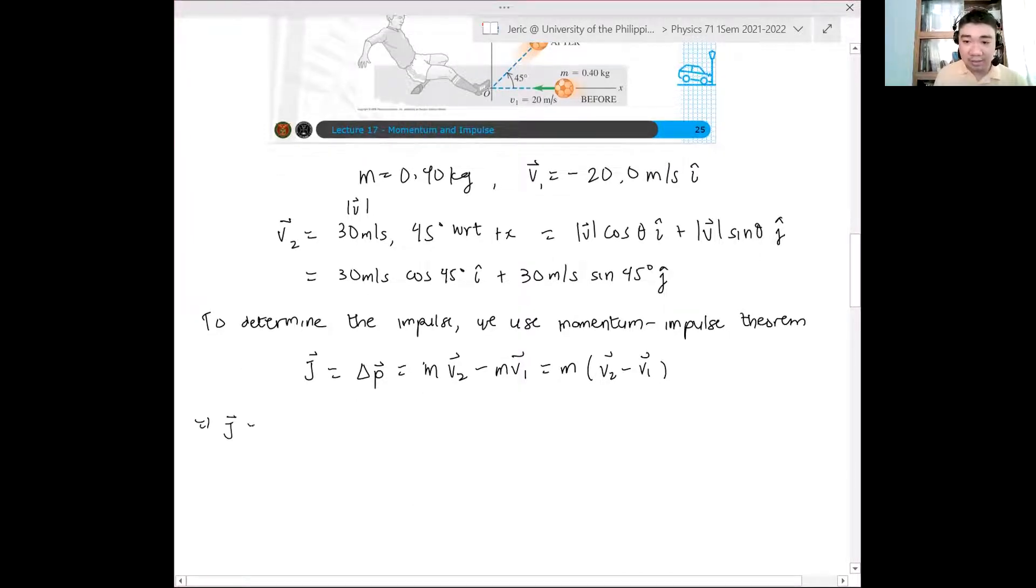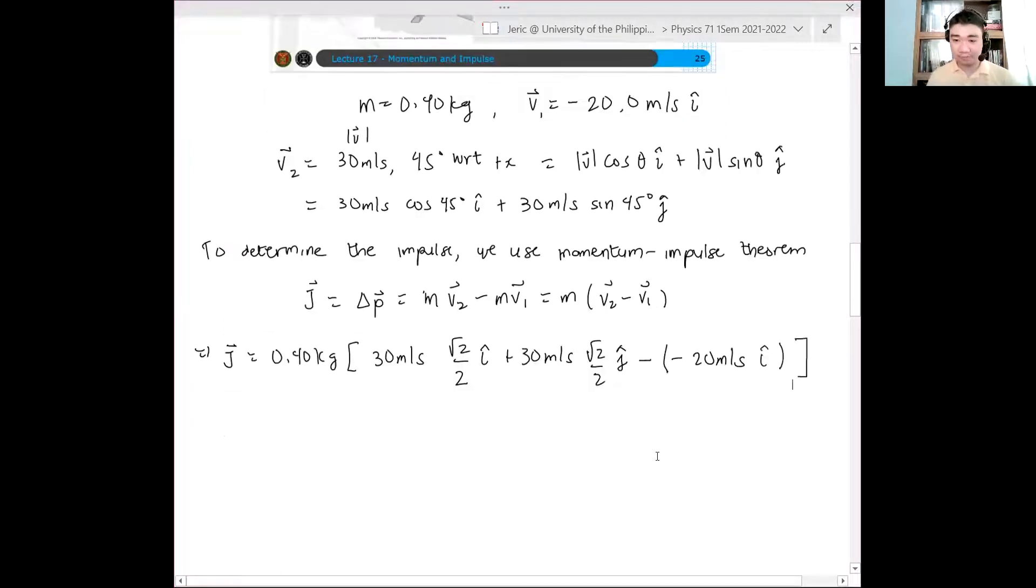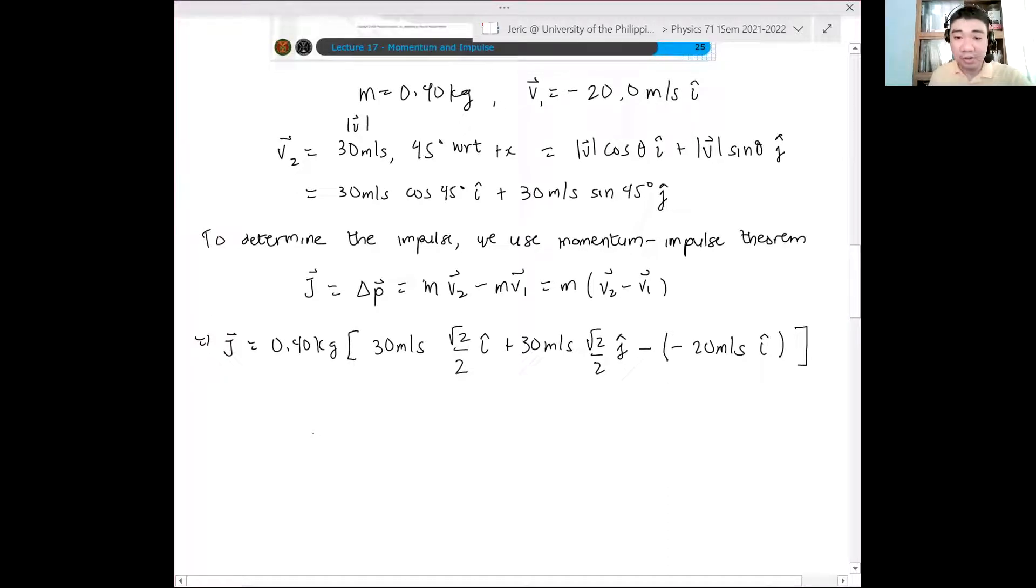So this means that J is simply the mass of the object is 0.40 kilograms, multiplied by V2 is simply 30 meters per second cosine of 45 degrees. So, but cosine 45 degrees is just square root of 2 over 2 i hat plus 30 meters per second square root of 2 over 2 j hat minus, but we have a negative sign here. So we have a negative here of 20 meters per second i hat. So when you do that, I'll just use my calculator here.